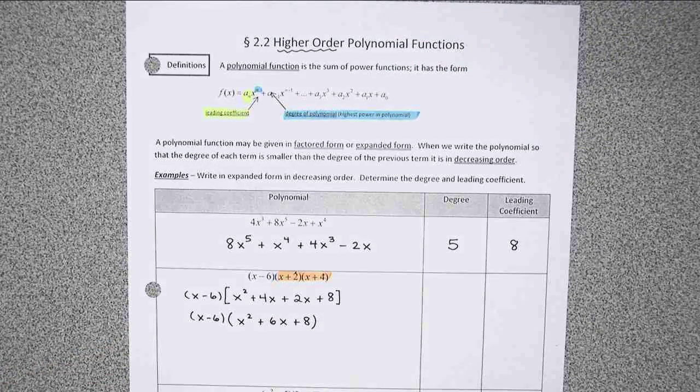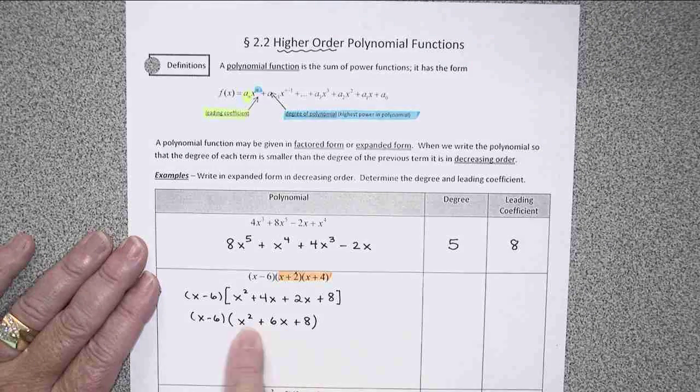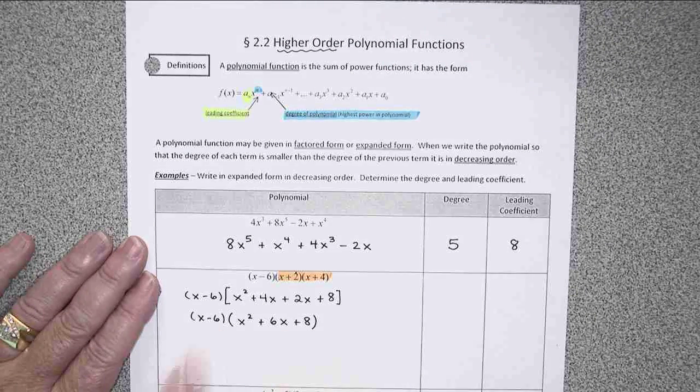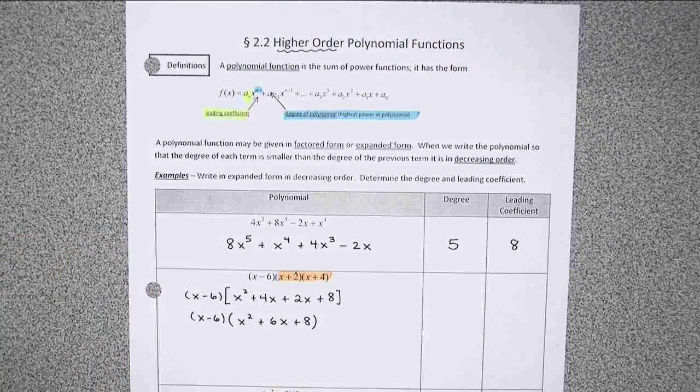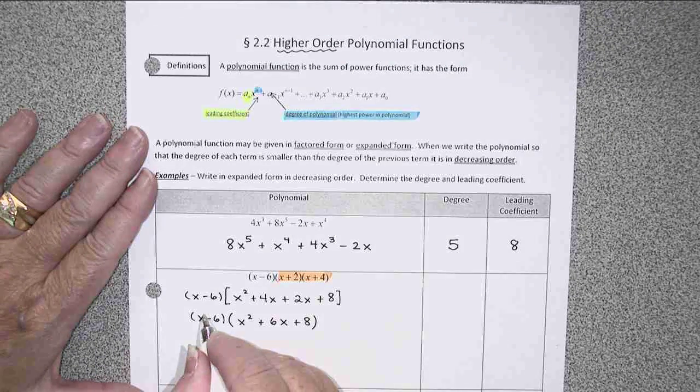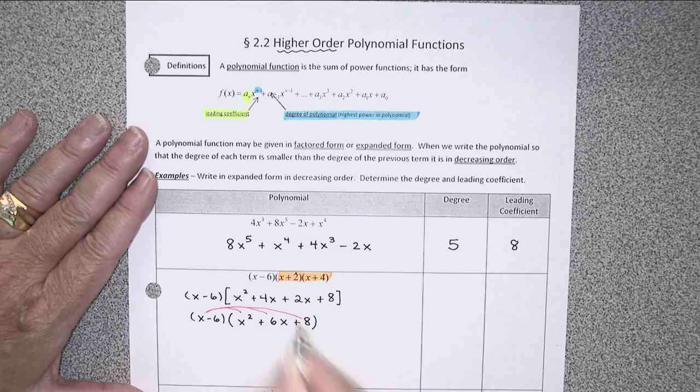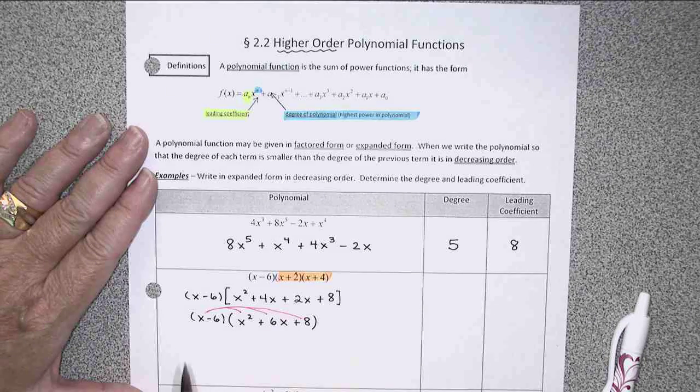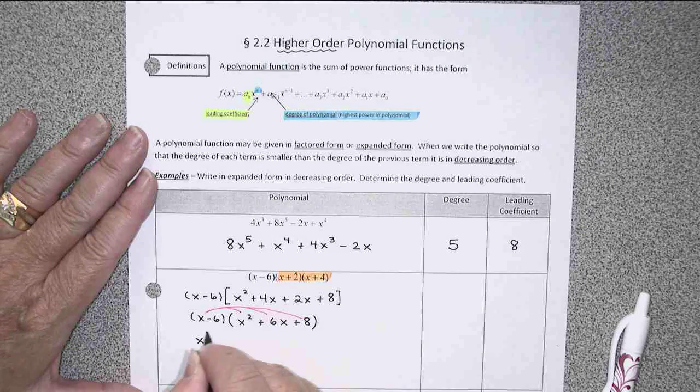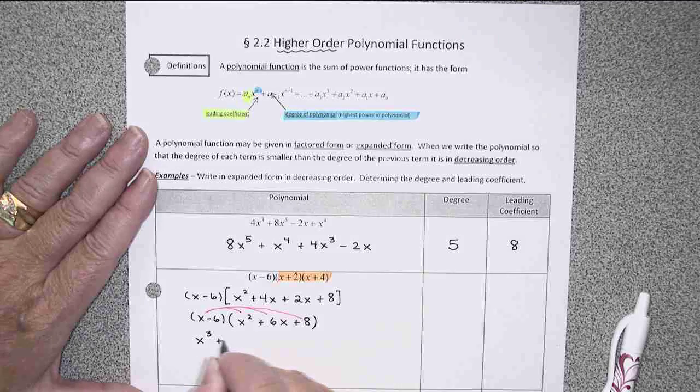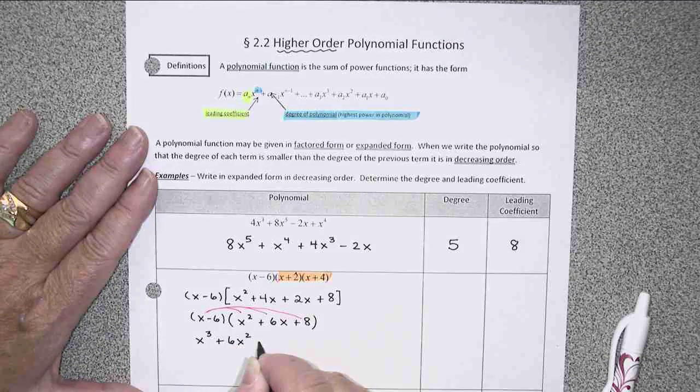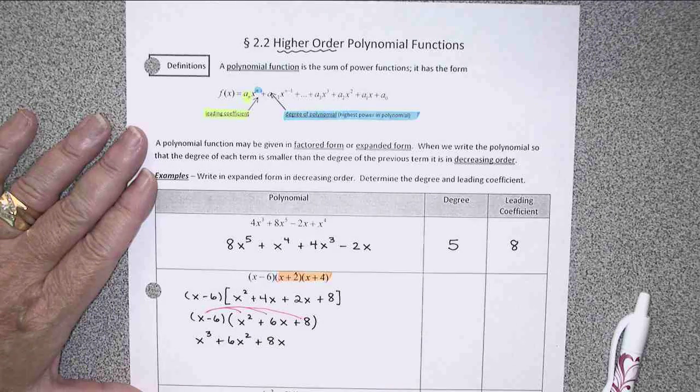To continue multiplying, I now have to take this answer and multiply it by x minus 6. And I really am going to need to use a double distributive law this time. First, let's distribute the x to all three terms. So we'll get x cubed plus 6x squared plus 8x.